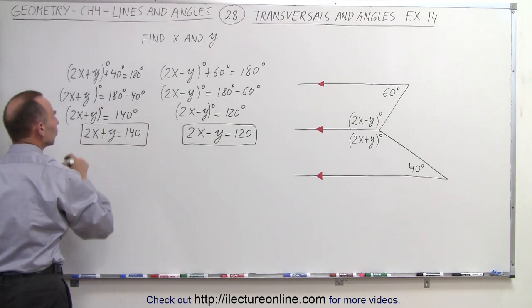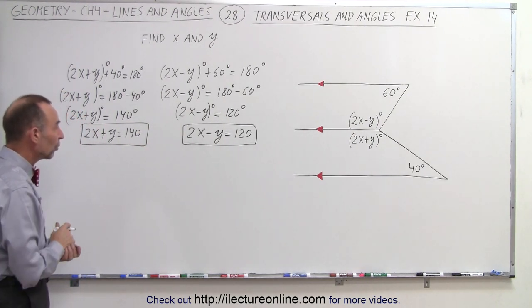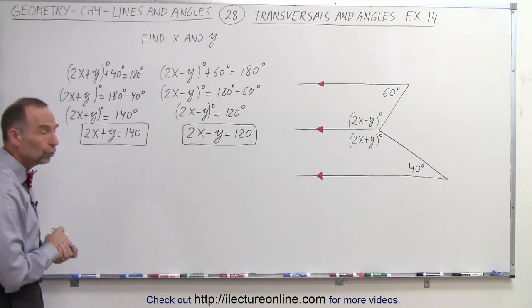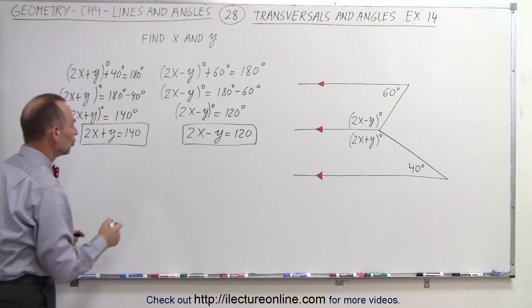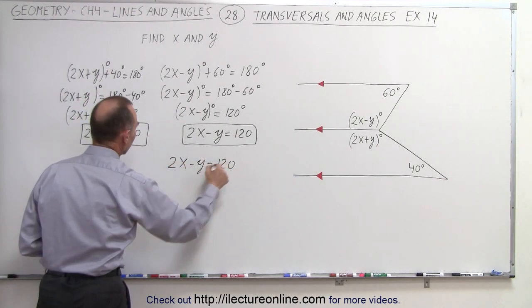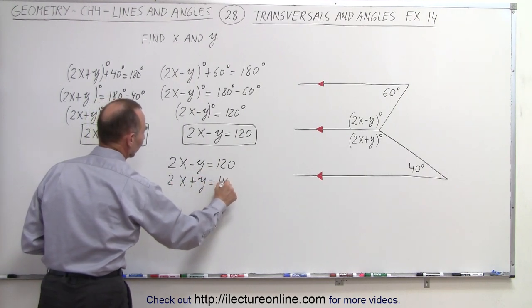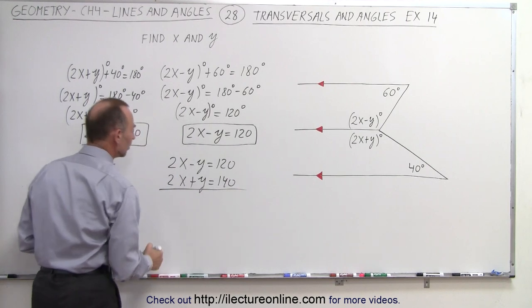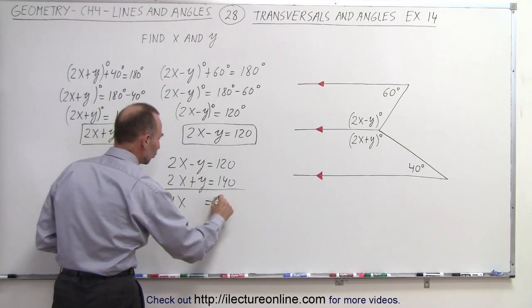And there's a second equation that includes the values for x and y. We now need to solve those two equations simultaneously, and we can do that by using the method of elimination. We're going to add those two together. So we're going to take 2x minus y equals 120, and 2x plus y equals 140. When we add these two together, we get 4x. The y's cancel out equals 260.